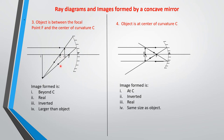Case four: when the object is at C. The image formed is also at C — it is inverted, it is the same size as the object, and it is real. Please study how to draw these ray diagrams — they are for your own benefit.